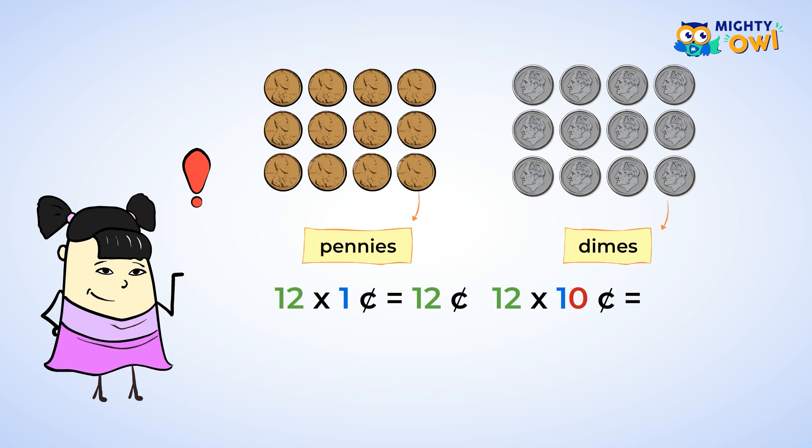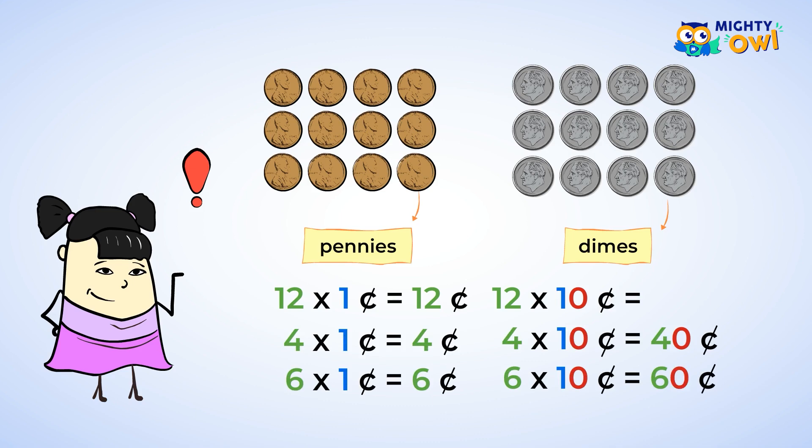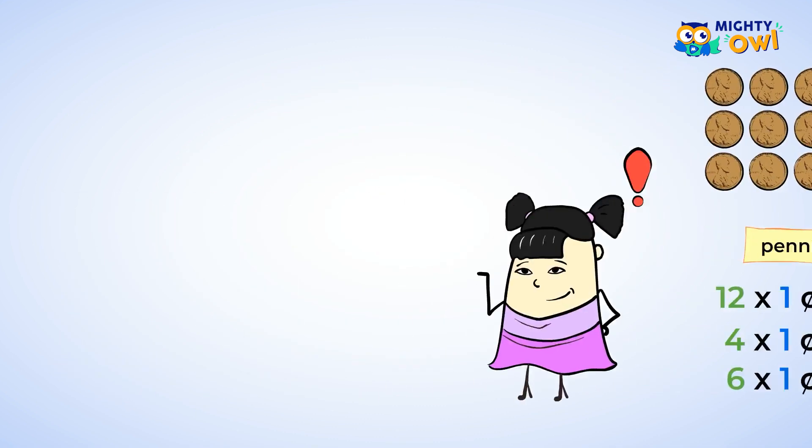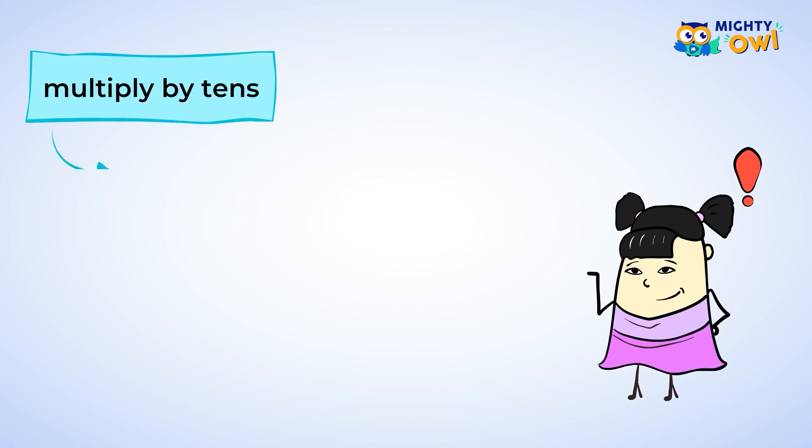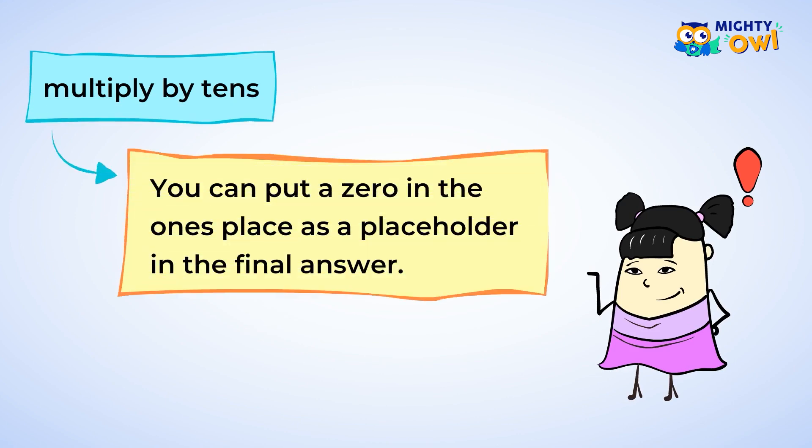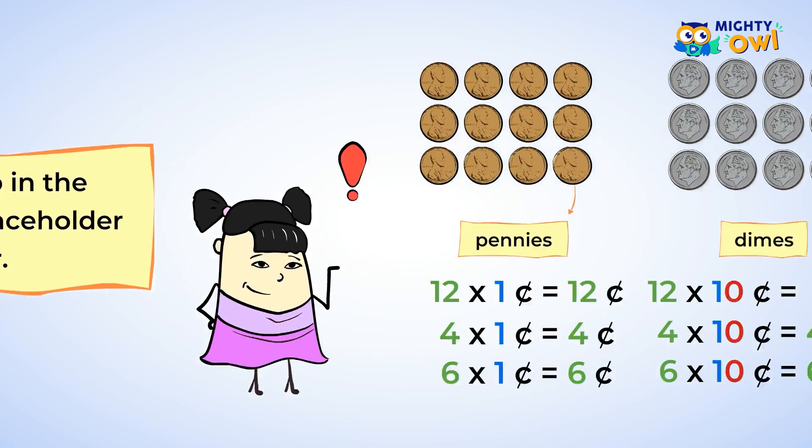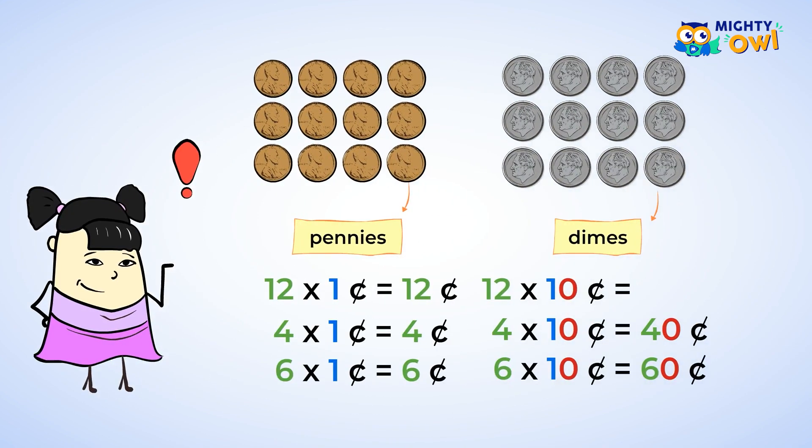When we multiply by ten, the final answer has a zero in the ones place. Forty has a zero in the ones place. Sixty has a zero as well. Ten has a zero in the ones place. When you multiply by tens, you can put a zero in the ones place as a place holder in the final answer. This shortcut means that any time you multiply a number by ten, all you have to do is put a zero at the end of the number in the ones place.